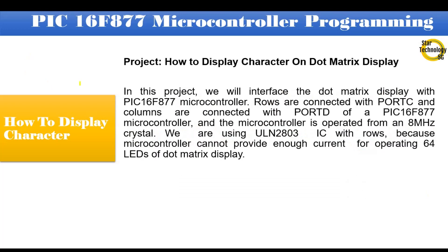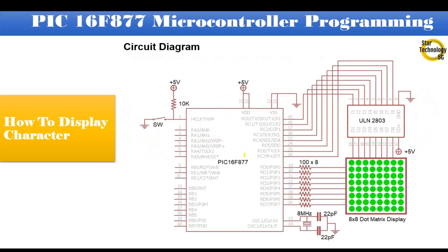Project: how to display a character on a dot matrix display. In this project we will interface the dot matrix display with a PIC16F877 microcontroller. Rows are connected with Port C and columns are connected with Port D. The microcontroller is operated from an 8 MHz crystal. We are using a ULN2803 IC with the rows because the microcontroller cannot provide enough current for operating 64 LEDs of the dot matrix display.